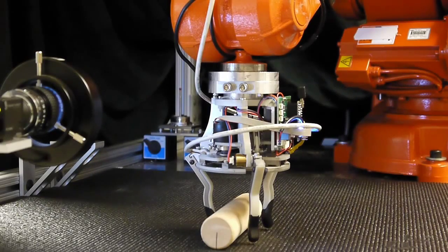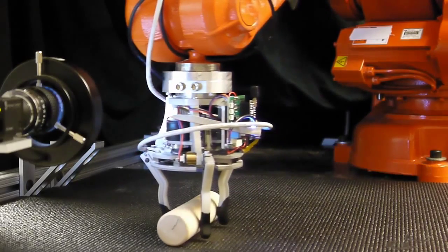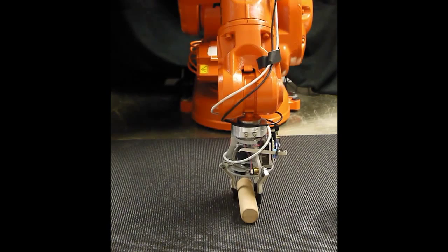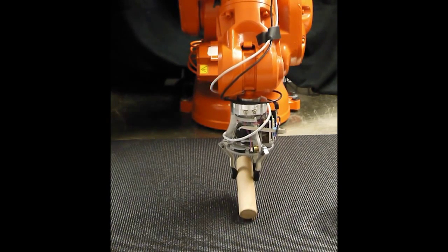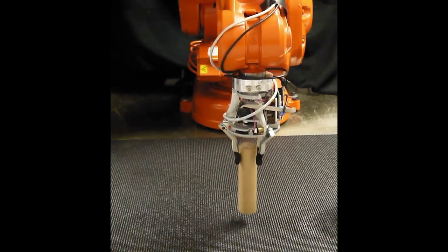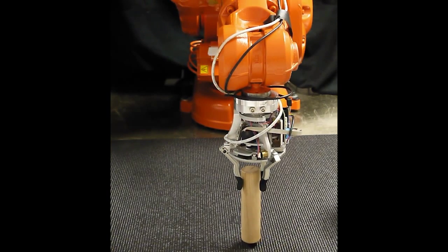Some of these actions don't look like regrasps, nor could they be described as in-hand manipulation, but all of these are ways to change the pose of the object relative to the hand. Some of these actions are also useful when grasping or placing an object.